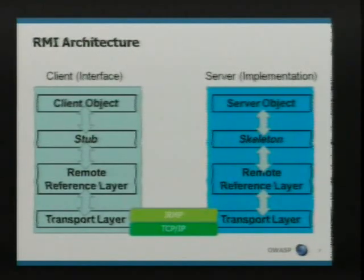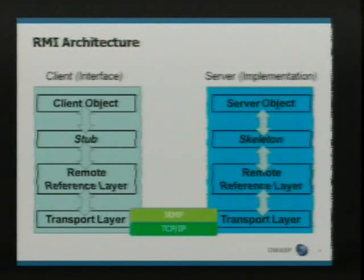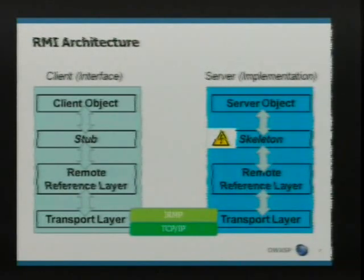There's one fundamental flaw in parts of the RMI architecture. It's assumed that without the stub, you can't talk to the business logic on the other side — the stub contains a lot of secrets. But imagine you had the ability to create your own stub to interact with any RMI service you wanted. Well, it is actually possible, because there are serious fundamental flaws in the skeleton layer, and this is going to allow us to create our own stub and talk to the business logic on the server.